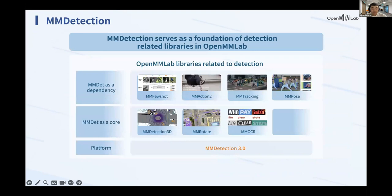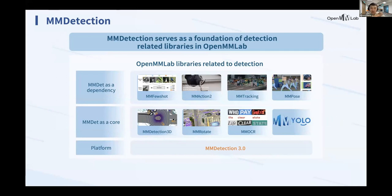MM Detection serves as a foundation for detection-related libraries in OpenMMLab. Based on it, MM Detection 3D, MM OCR, and MM Rotate all use it as a core library. We also have MM YOLO, which integrates many YOLO series methods and supports RTMDet for training and deployment.